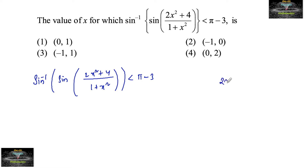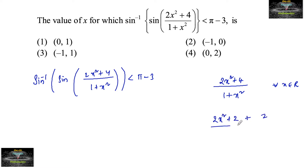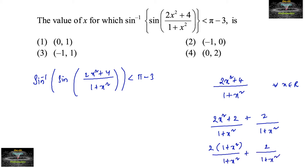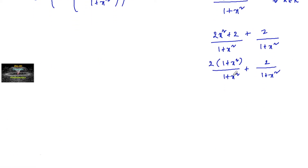Let's find the range of (2x²+4)/(1+x²) for all x belonging to R. We can write it as (2x²+2)/(1+x²) + 2/(1+x²), which simplifies to 2 + 2/(1+x²). For any value of x, the term 2/(1+x²) lies between 0 and 2.